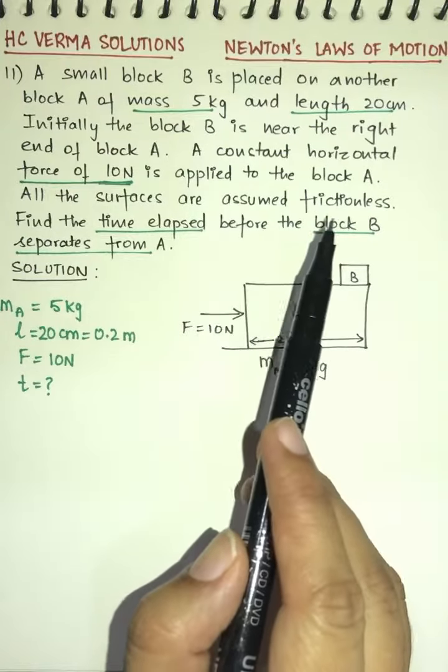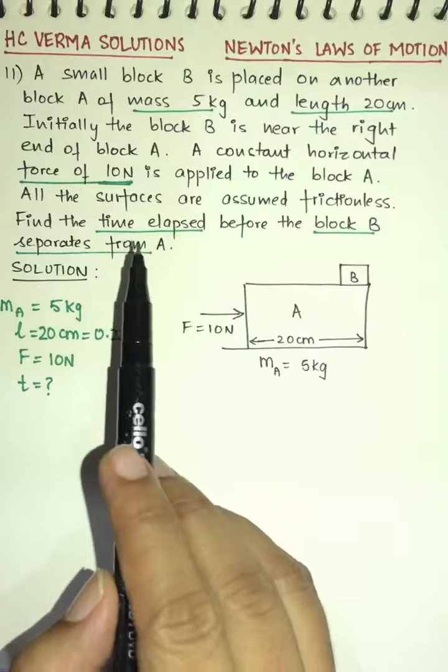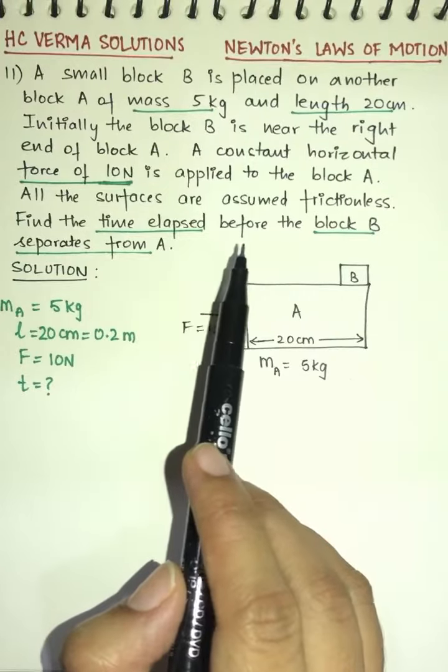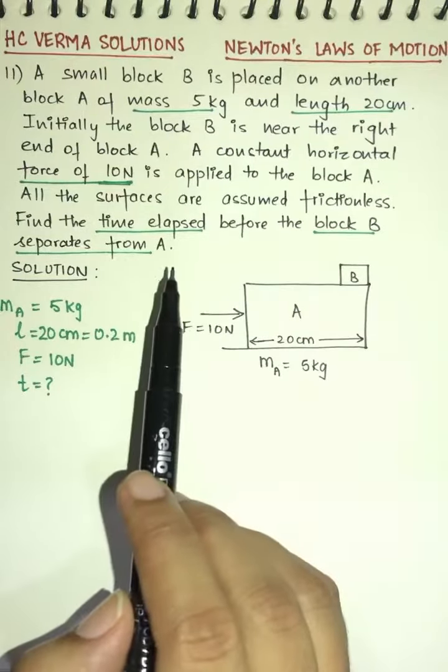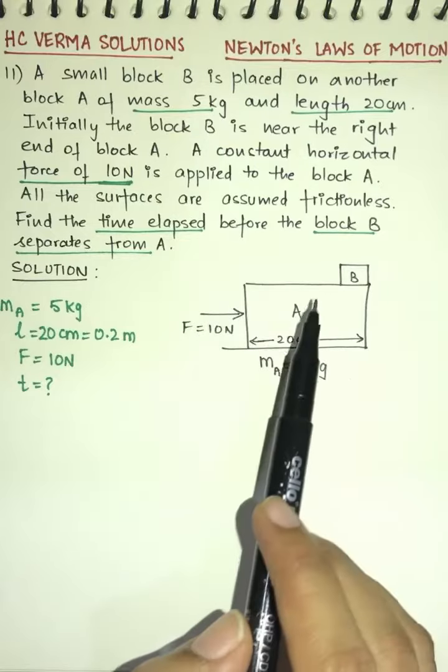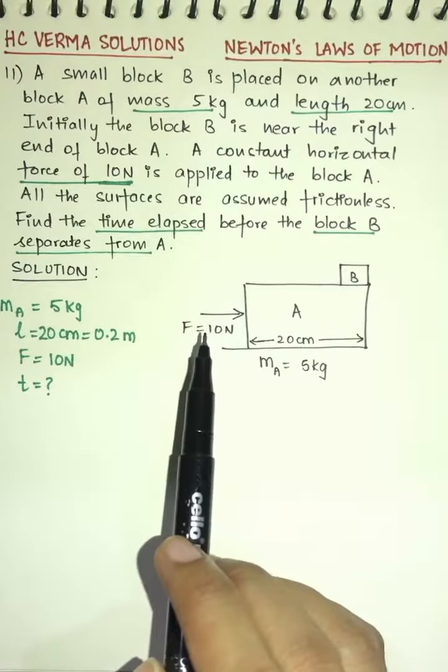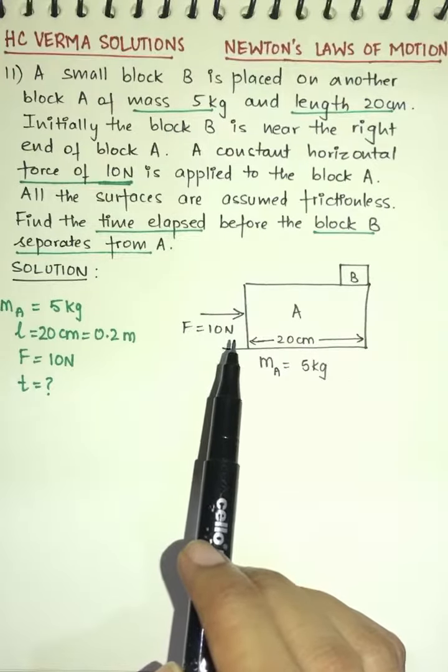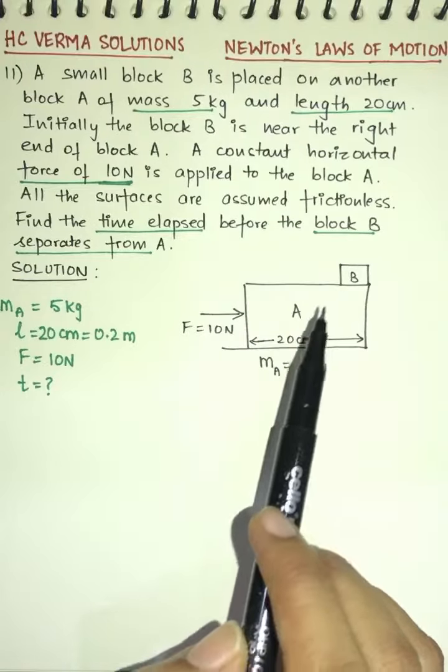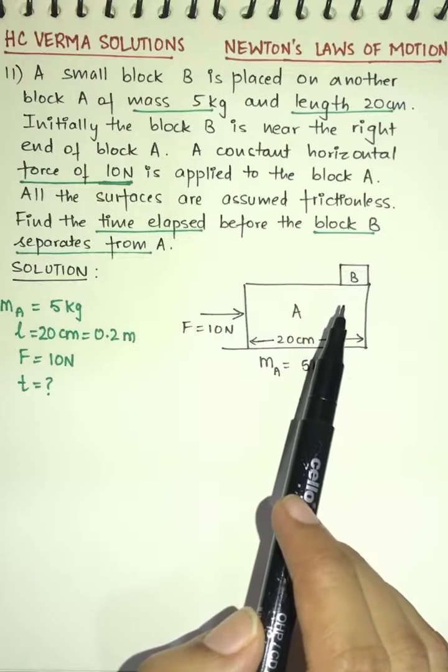A constant horizontal force of 10 N is applied on block A. All surfaces are frictionless, and we have to find the time elapsed before block B separates from A. B will separate from A because the 10 N force is applied on A and there is no friction between B and A.